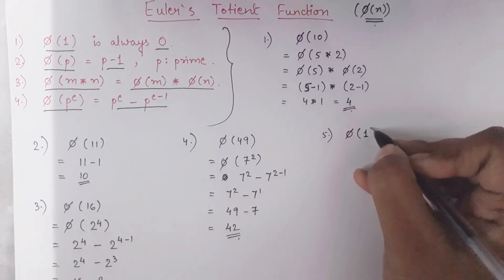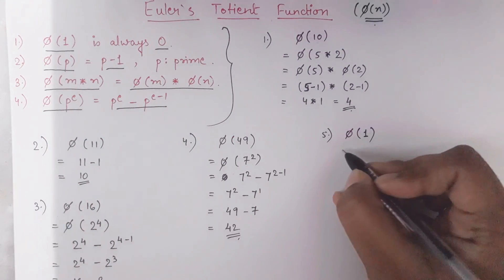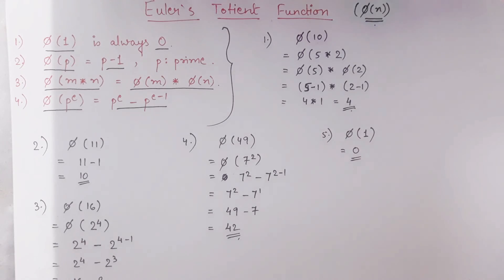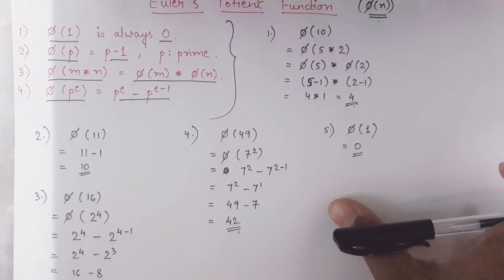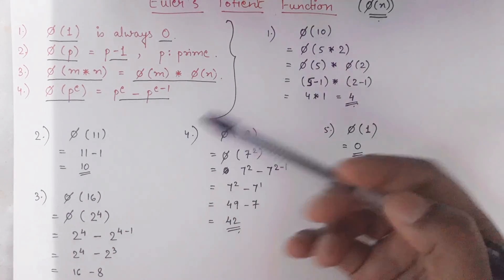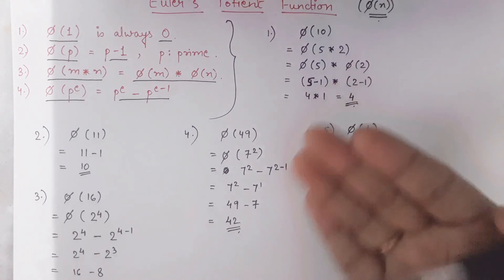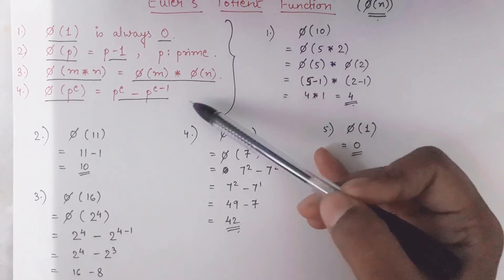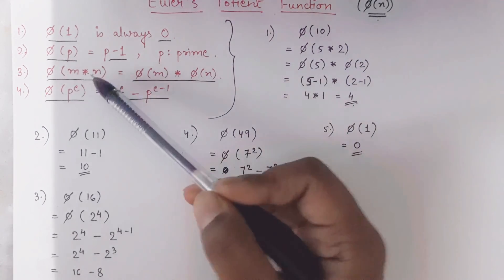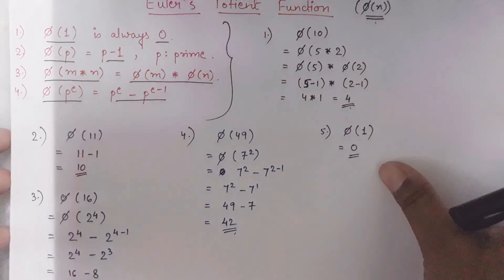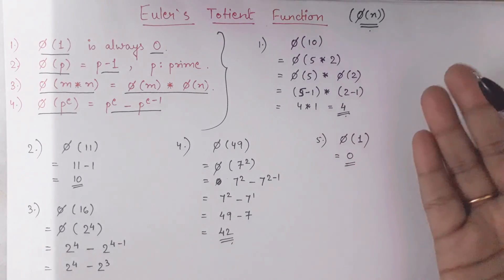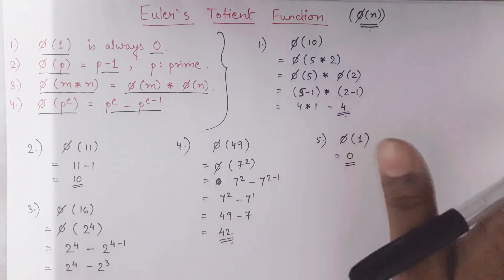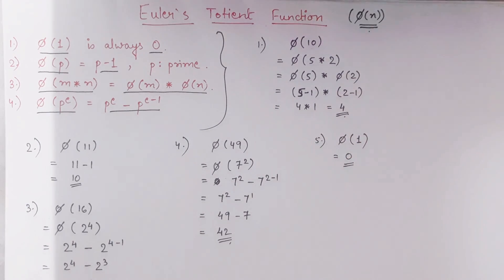As already mentioned, if given phi of 1, we know phi of 1 is directly 0. So these are the examples where almost all the steps are covered. The only thing you have to remember is the sequence: first check if it is prime, then check if it can be written as p raised to e, then try multiplication of two numbers. It is a very simple topic — try more examples, ask any doubts in the comment section. Thank you so much.